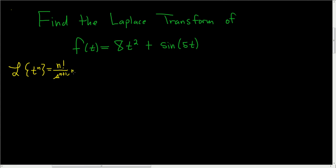This is valid for n equals 1, 2, etc. It's also valid for n equals 0. And then the Laplace transform of the sine of kt is equal to k over s squared plus k squared. If it was cosine kt, it would be identical except you would have an s. A nice trick is to remember that cosine has the s up top, sine has the k.